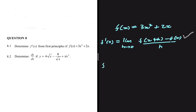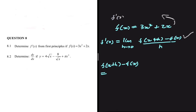We'll solve f of x plus h minus f of x separately and then substitute it back into the equation. But before we do that, we can simply solve this problem using the power rule, which gives us f prime of x equals 6x plus 2. So when we are done solving using first principles, we should get 6x plus 2 — if we don't, we've done something wrong.